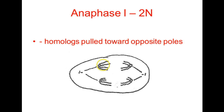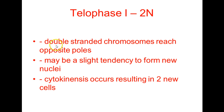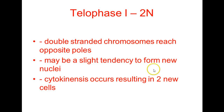In anaphase 1, the cell is diploid. The homologs are pulled towards opposite ends of the cell along by the centromere, with the arms of the chromosome dragging behind, giving a V shape — but with double-stranded chromosomes. In telophase 1, the cell is diploid. These double-stranded chromosomes reach the opposite poles, there may be a slight tendency to form new nuclei, and cytokinesis occurs producing two new cells.